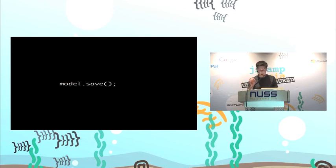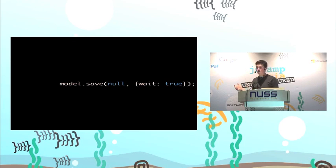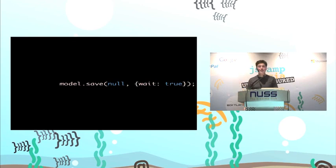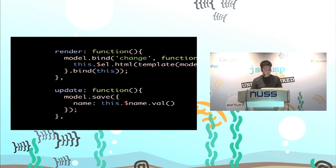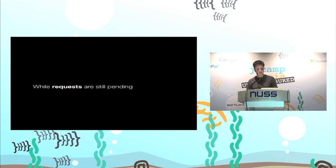As soon as you call model.save, an update event gets fired, the view gets re-rendered, and a request to the server gets sent. Both Backbone and Spine have this simple API. Backbone has a neat feature where you can pass wait: true — because sometimes you do want the server to respond successfully before updating the UI. I work for a payments company, and that's the one place you can't really have an asynchronous UI — you can't tell someone they've paid when they actually haven't. So that's the case where you use wait: true. In your controllers you bind to the change event in the models and re-render whenever that event fires, and in the update handler, whenever the form gets submitted, you save the model with values from the page. The change event fires, the view re-renders, and the request to the server is sent — all in the background.